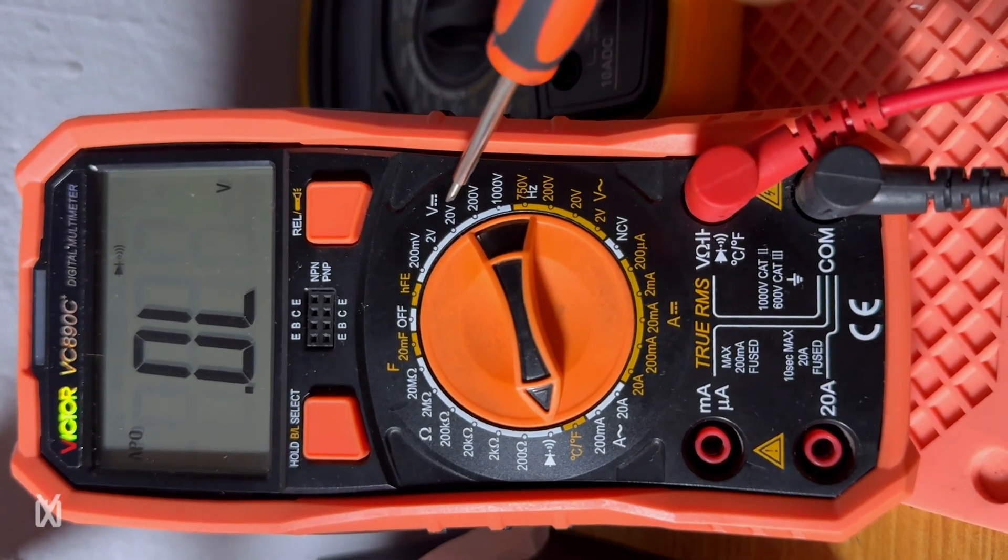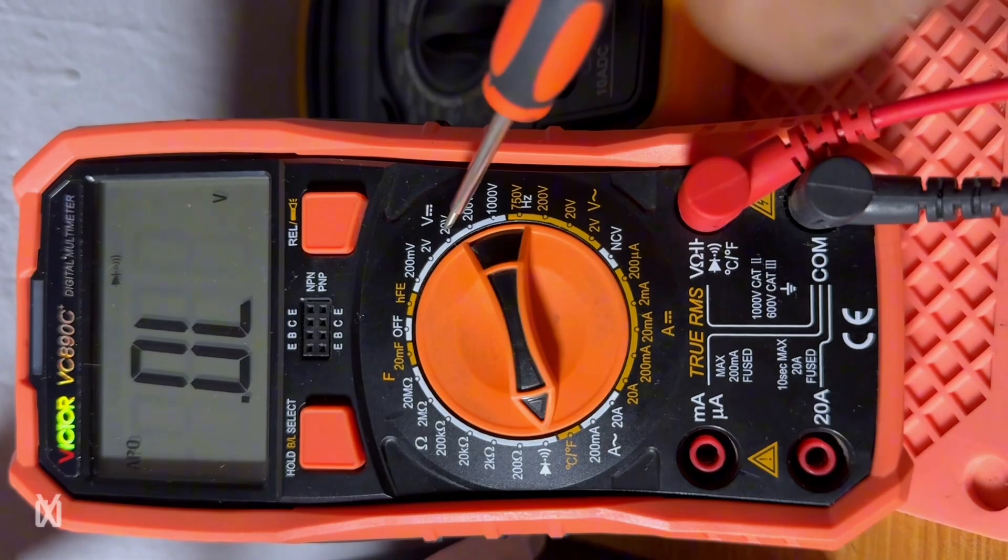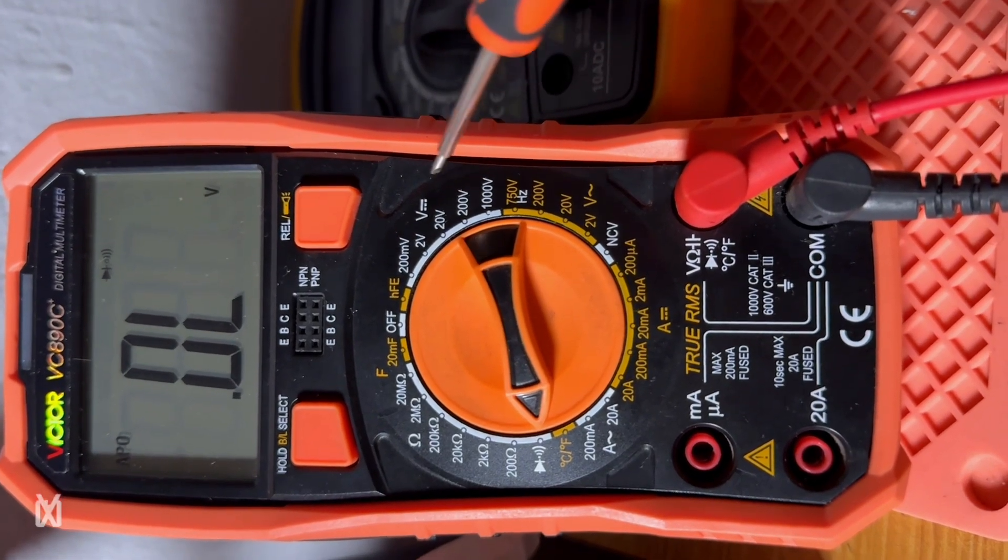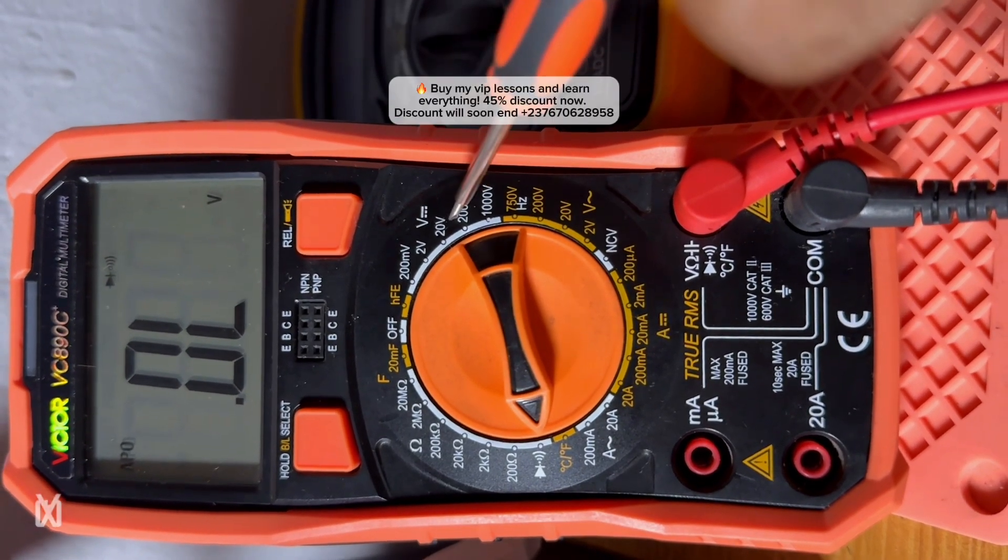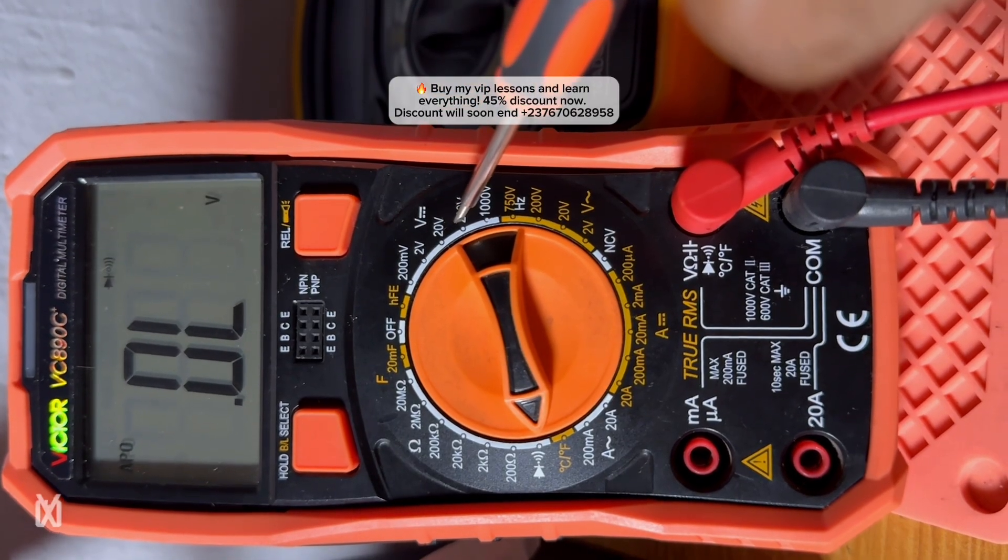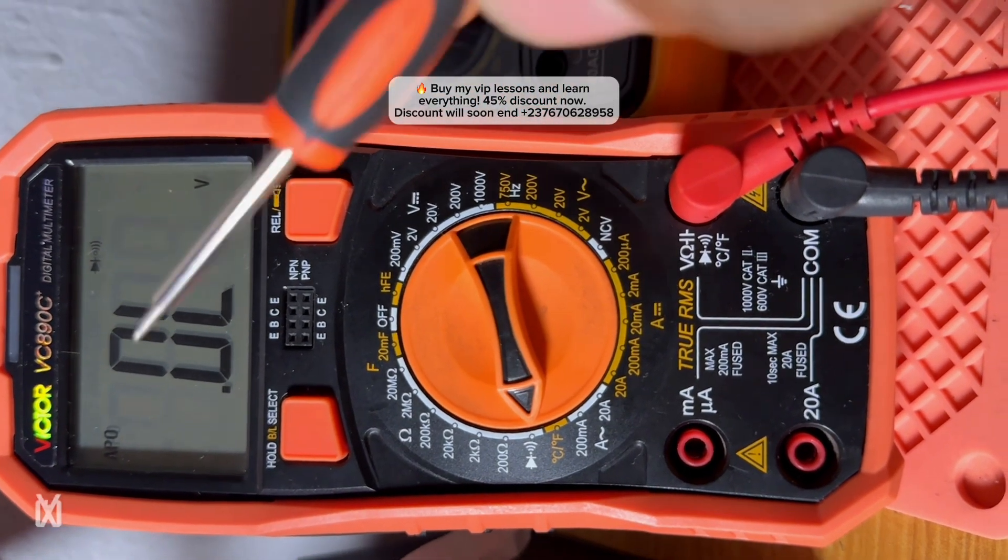And also they know about the DC range. Some of them use the 20 volt range or the 200 volt range to test their battery only.